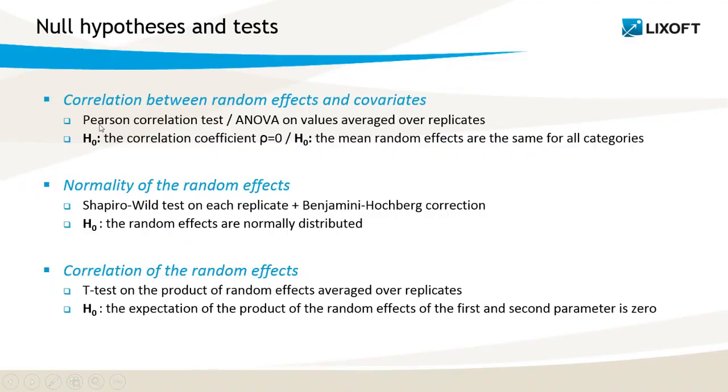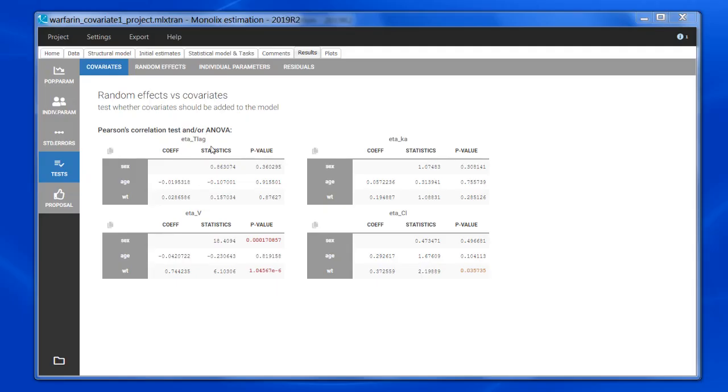The null hypothesis of the Pearson correlation test is that the correlation coefficient is equal to zero. So a small p-value means that the Pearson correlation coefficient is significantly different from zero. This takes into account the correlation coefficient itself, but also the number of individuals via the degrees of freedom of the t-distribution. The eta values used for the test are calculated using the individual parameters sampled from the conditional distribution, not the EBEs, to ensure unbiased tests.